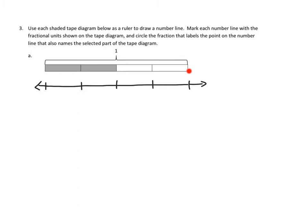If we'd only come this far, if nothing was shaded, we would have zero fourths — so I'm going to write zero fourths. If we'd gone this far, that would be one fourth — I'm going to label that here. If we had gone out two fourths, that would mean we're here, two fourths. We might have gone out three fourths, so I'm going to label that three fourths. Or we might have gone out four fourths and I'll label that here. Now in this case, we're circling the fraction that also names the selected part of the tape diagram, and we've gone out two fourths. So I'm going to go ahead and circle two fourths right here.